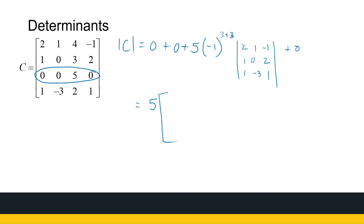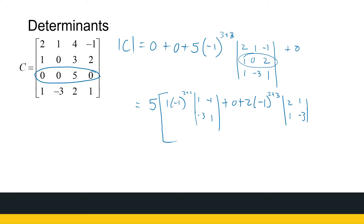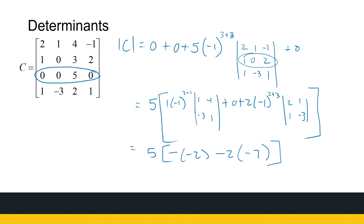To calculate the determinant of the inner 3x3 matrix, we use cofactor expansion again, choosing row 2 because it has a zero. That's 1 times minus 1 to the power of 2 plus 1, times the determinant of the submatrix with entries 1, minus 1, minus 3, 1, plus 0, plus 2 times minus 1 to the power of 2 plus 3, times the determinant with entries 2, 1, 1, minus 3. This gives 5 times minus 1 times minus 2, plus 0, minus 2 times minus 7. In the brackets we get 16, so 5 times 16 equals 80 — that's the determinant of the 4x4 matrix.